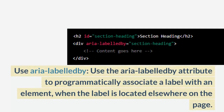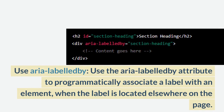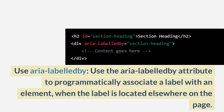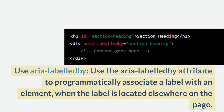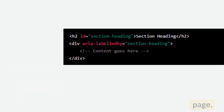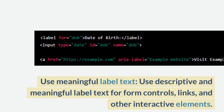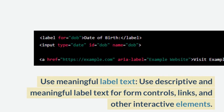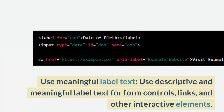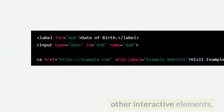Use ARIA Labelledby: Use the aria-labelledby attribute to programmatically associate a label with an element when the label is located elsewhere on the page. Use Meaningful Label Text: Use descriptive and meaningful label text for form controls, links, and other interactive elements.